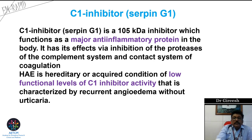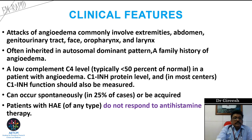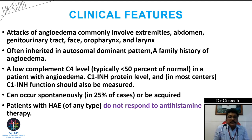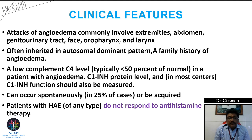In hereditary angioedema, there are hereditary or acquired low function levels of C1 inhibitor activity. Clinical features include attacks of angioedema commonly involving the extremities, abdomen, genitalia, face, oropharynx, and larynx. Family history may be present. Complement C4 level is less than 50% of normal, which is a key diagnostic feature.